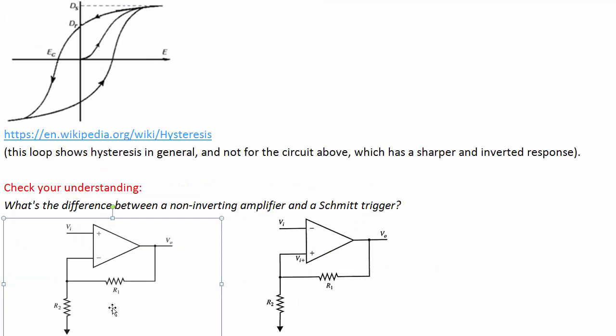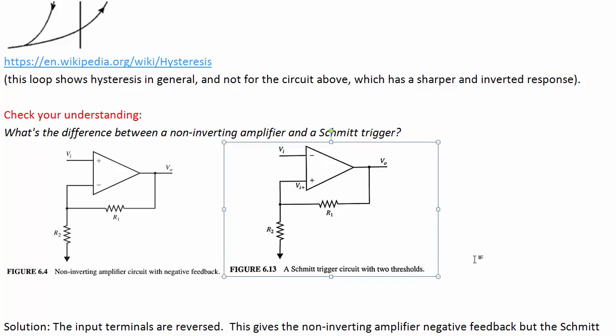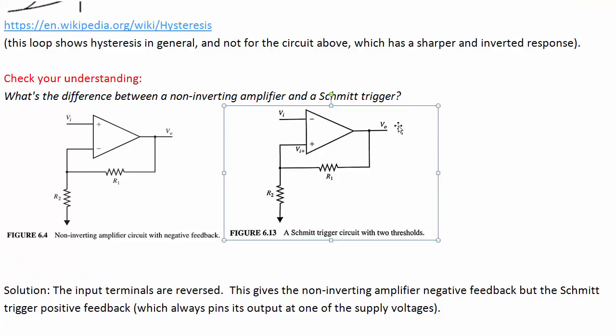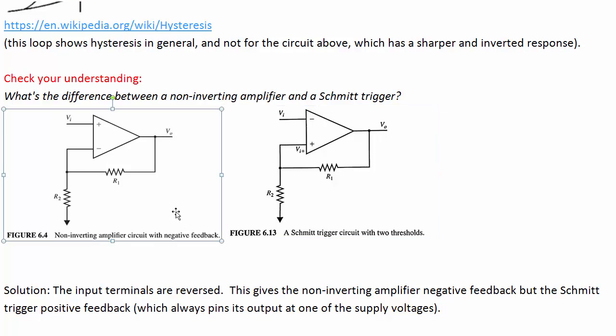Check your understanding. What's the difference between a non-inverting amplifier and a Schmidt trigger? This is like one of those spot-the-difference puzzles. Well, the input terminals are reversed. Here's our non-inverting amplifier. Here's our Schmidt trigger. This is what gives the Schmidt trigger positive feedback. So the output is always pinned to either plus or minus Vs, whereas the non-inverting amplifier didn't have that problem.